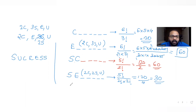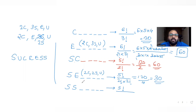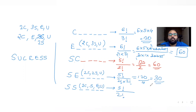After SE, the next second-position letter is S, giving SS as the start. With five places remaining and the remaining letters being two C's, one S, one E, one U — only two C's repeat — so 5!/2! = 60 words start with SS.